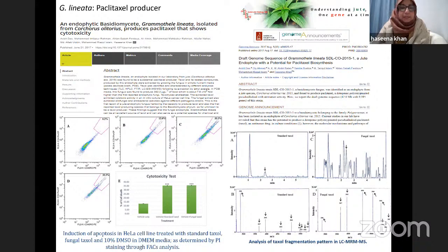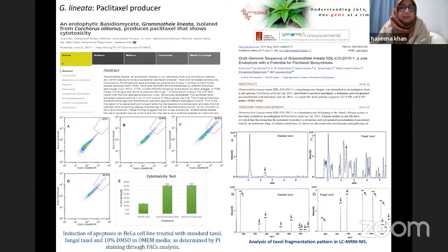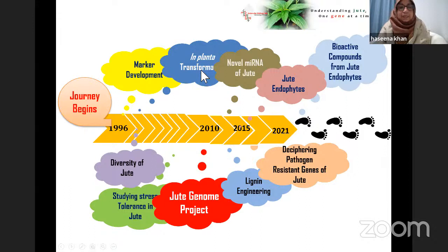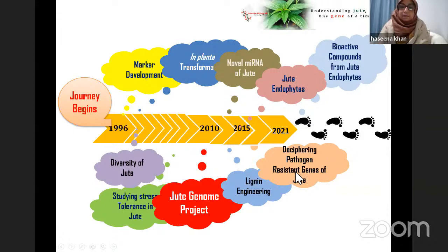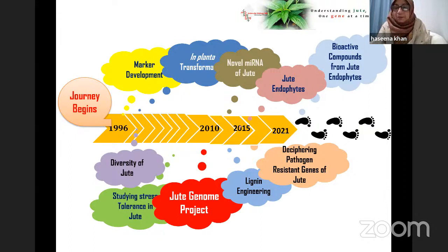Let me summarize my journey, which began in 1996. We started with developing molecular markers and used them to understand jute diversity, then to study stress tolerance in jute. We developed an in-plant transformation method, completed the jute genome project, worked on novel jute microRNA, and performed lignin engineering. Then we came across endophytes, studied pathogen resistance, and are now identifying bioactive compounds from jute endophytes. Jute is a wonder crop — when it grows, its long taproot goes deep into soil, breaks the plow pan, enriches the microbial population, and enriches the soil. It is highly environment-friendly, giving more to the soil than it takes in terms of fertilizer.